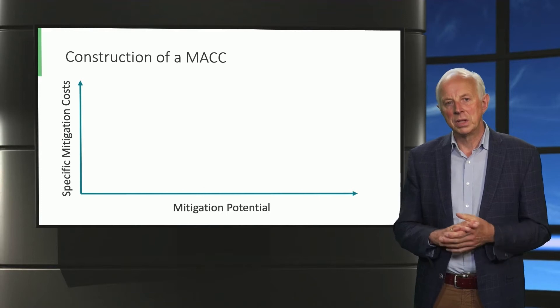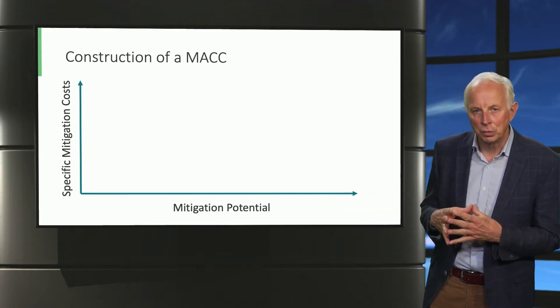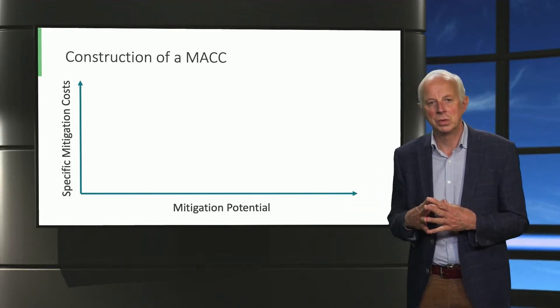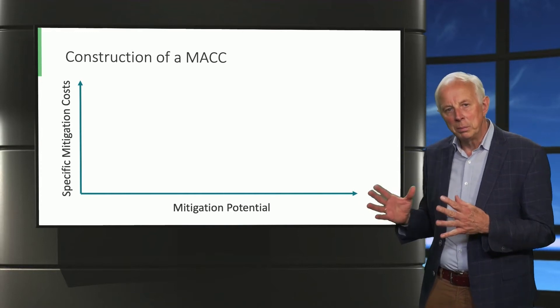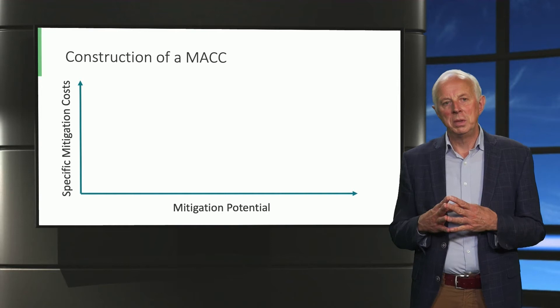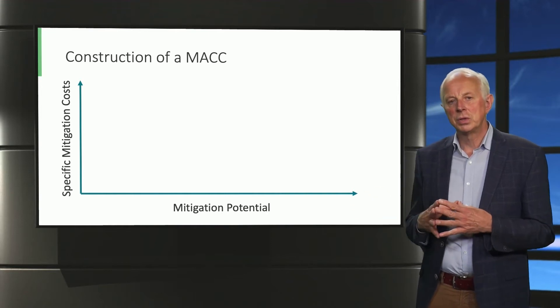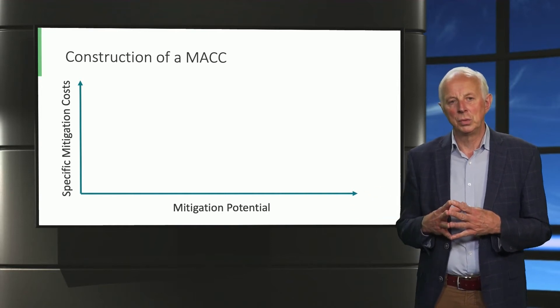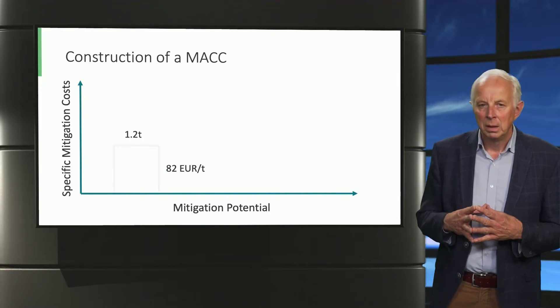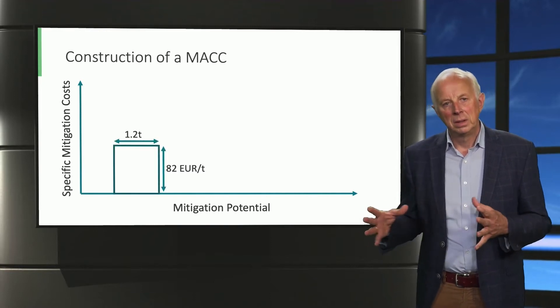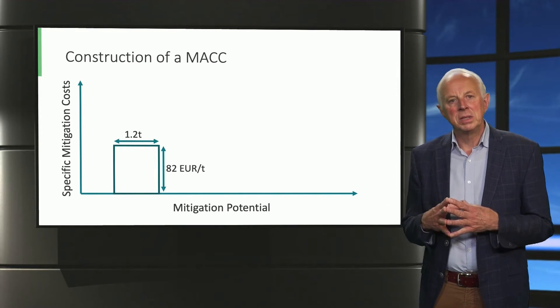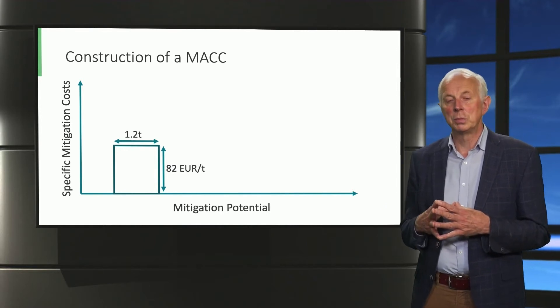Let's go back to the example of the installation of the photovoltaic system on a house. We saw that the installation of such a system will avoid 1.2 tons of CO2 emissions per year and it will cost $82 per ton of CO2 avoided. You can present this as a rectangle in which the width gives the avoided emissions and the height gives you the cost per ton of CO2.